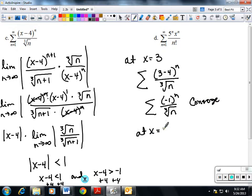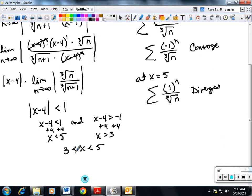At x equals 5, I have (5-4)^n over the cube root of n, which is 1^n over the cube root of n. So that's a p-test. p is less than 1, so therefore it diverges. So that means bracket at 3 and not at 5. So my answer is from 3 to 5.